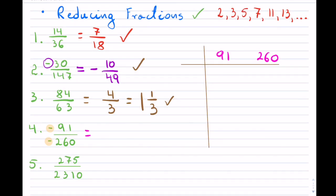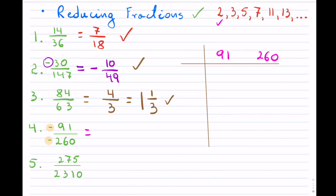Starting with 2 — 2 won't work with 91. Moving to 3: 3 will not work with 91 because the sum of digits 9 plus 1 is 10, and 10 is not divisible by 3. What about 5? 5 clearly doesn't work either, because 91 ends in a 1, so I cannot divide by 5.